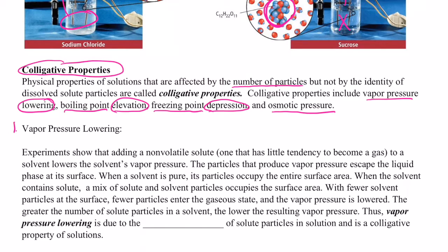The first one we're going to talk about is vapor pressure lowering. Experiments show that when you add a non-volatile solute to a solvent, the vapor pressure will lower. Non-volatile means that the intermolecular forces of attraction are so strong that the solute does not evaporate easily — those particles like to stick together.